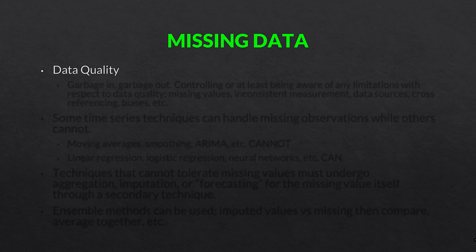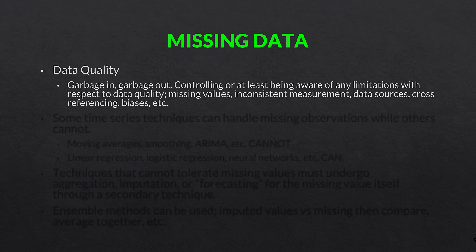Next, missing data and data quality. Garbage in, garbage out. Controlling for, or at least being aware of, any limitations with respect to data quality — such as missing values, inconsistent measurements, problematic data sources, cross-referencing, biases, et cetera — is important. Once the problem is formulated and you go to get the data, always keep in mind the quality of the data you're using to solve your problem.